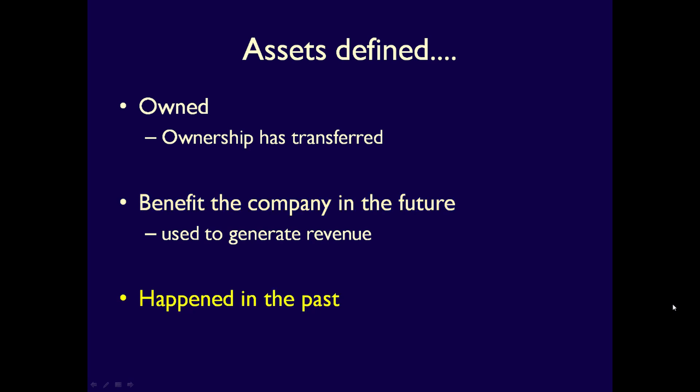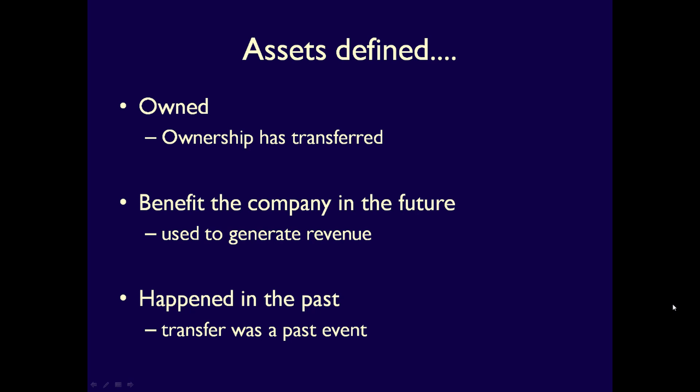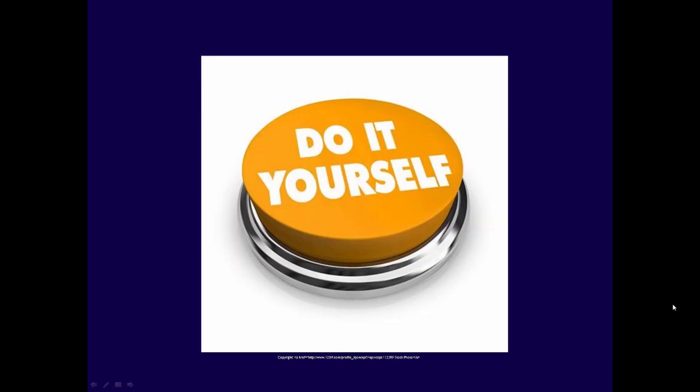The last characteristic of an asset is that they're due to past events, meaning there is an event in the past that transferred ownership of the asset to the business. This is important because if you plan to purchase an asset in the future, you can't claim it as an asset now — the event has not yet happened. It has to be a done deal. To summarize, everything that a company owns is considered an asset: a resource obtained through a past event that will benefit the business in the future. Stop right now and list all your assets — everyone has assets, and listing yours will help you better understand the concept.